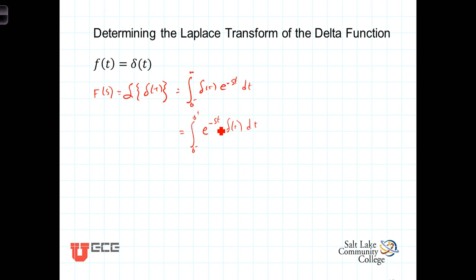so this is only evaluated at one value, e to the 0, which is 1. We have then e to the 0 times the integral from 0 minus to 0 plus of the delta function. This, of course, is just 1, and we end up with the Laplace transform of delta of t is simply 1.